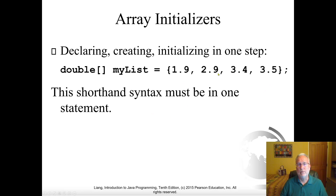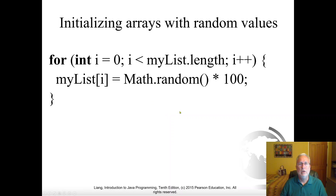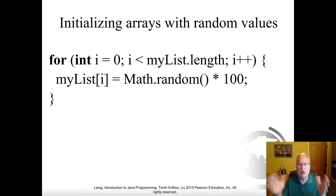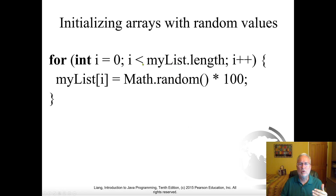It doesn't have to be on one line — you could break it across multiple lines, especially for a two-dimensional array. For initializing with random values, you loop through a for loop. For loops and arrays go together hand in hand. Arrays have a certain length, and you use for loops when you know the length. Here you go from zero while i is less than myList.length. So if the list length changes anywhere else in the program, this code will still work — it's not hard-coded.